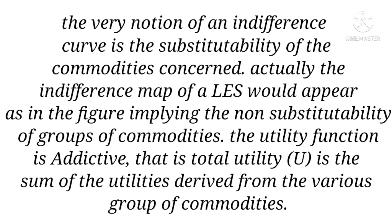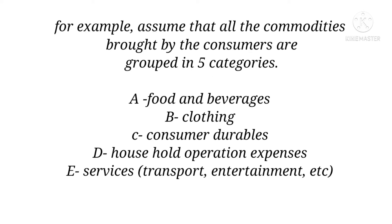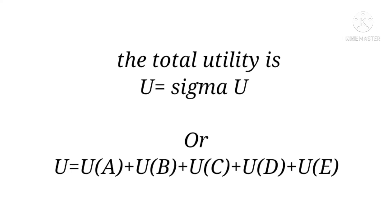Actually, the indifference map of a LES would appear as in the figure, implying the non-substitutability of groups of commodities. The utility function is additive, i.e., total utility U is the sum of the utilities derived from the various groups of commodities. For example, assuming all commodities bought by the consumer are grouped into five categories, the total utility is U(A) + U(B) + U(C) + U(D) + U(E).